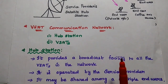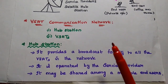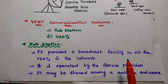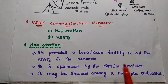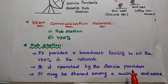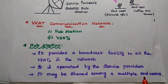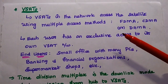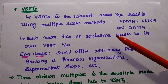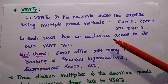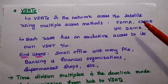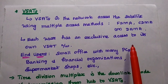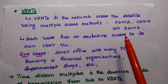The V-SAT communication network consists of two important parts: the Hub Station and the V-SATs. The Hub Station provides broadcast facilities to all V-SATs in the network, is operated and controlled by the Service Provider, and may be shared among multiple end-users. V-SATs access satellite services using multiple access methods like FDMA, CDMA, or DAMA. Each end-user has exclusive access to its own V-SAT network using coding methods.